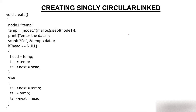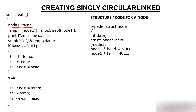Inside the create function, you have created a pointer 'temp' of data type node1. Node1 is a variable of that structure having 2 parts: data and address. Since we have typedef'd it, we use node1. If you had not used typedef, you would have to write 'struct node' everywhere you see node1.